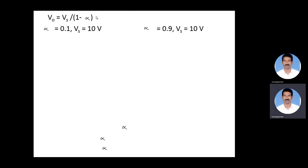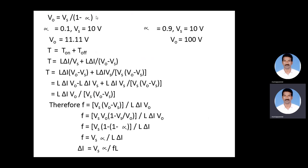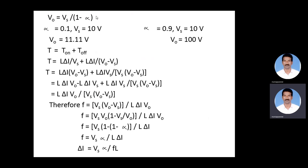The maximum value of duty cycle is 0.9 in practice, though in an ideal case it can reach 1. Using the output voltage formula V0 = Vs/(1 − α): with α = 0.1 and Vs = 10 V, the output voltage is 11.11 V. With the same input of 10 V and α = 0.9, the output voltage is 100 V. In either case, the output voltage is greater than the input voltage, confirming this is a boost converter.